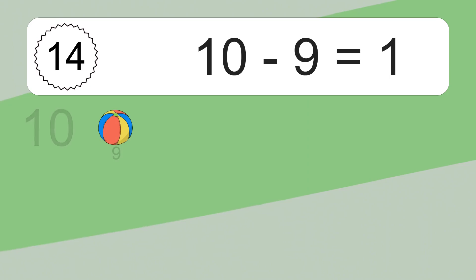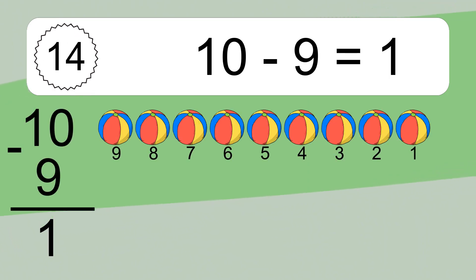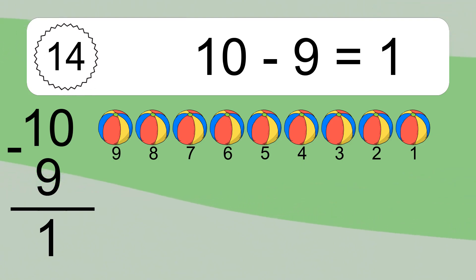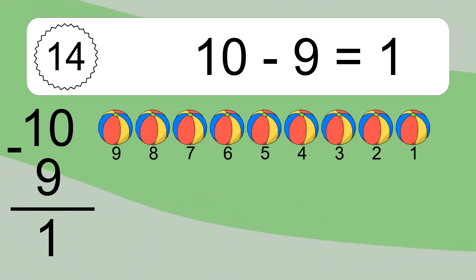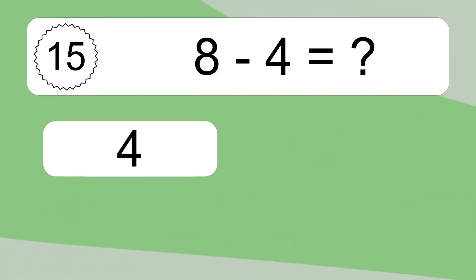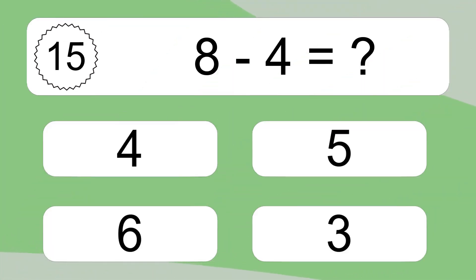10 minus 9 equals what? 10 minus 9 equals 1. Let's count it: 9, 8, 7, 6, 5, 4, 3, 2, 1.